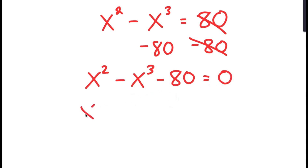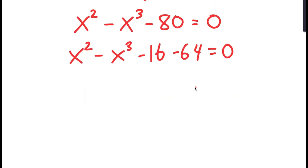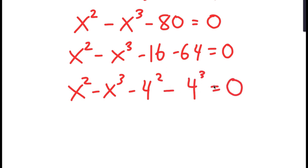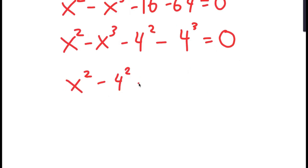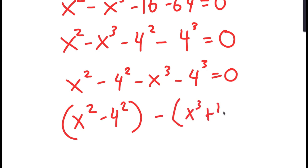From here, I'm going to replace negative 80 with negative 16 minus 64. I'm going to rewrite negative 16 as negative 4 squared, and negative 64 as negative 4 to the power of 3. I'm going to group x squared with negative 4 squared, and x cubed with negative 4 cubed. Then I rewrite this as x squared minus 4 squared, grouped with minus x cubed plus 4 cubed — putting the plus because the negative sign distributes.